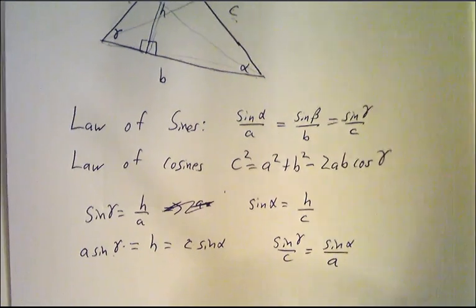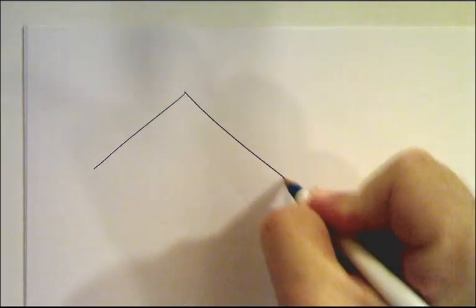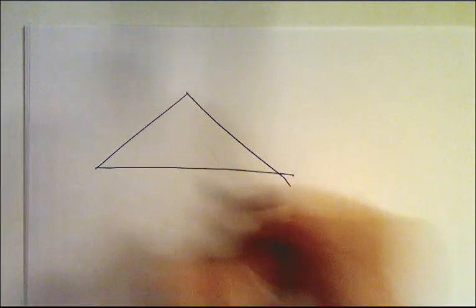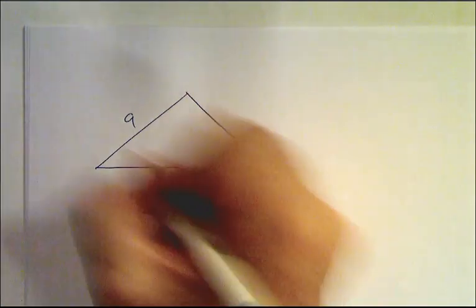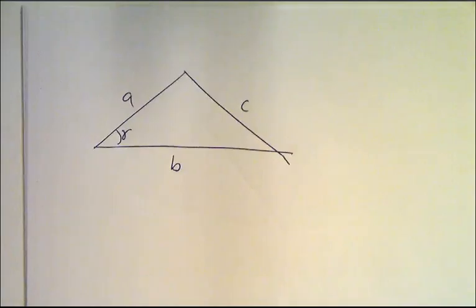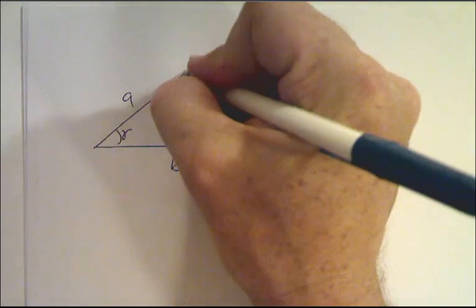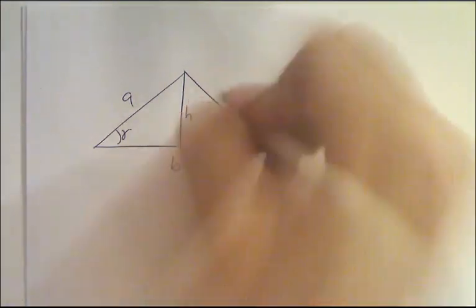The law of cosines, we have to work a little bit harder unless we know vectors and then it becomes easy. So let's do it without vectors. Let me draw the triangle again. So A, B, here's gamma, and here's C. So I'm going to drop our perpendicular, H.